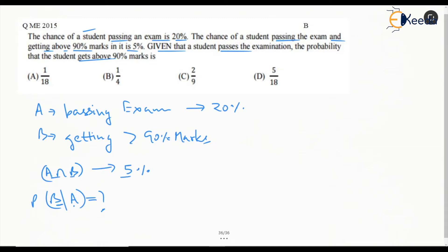We know that probability of A intersection B is probability of A into probability of B given A. It can also be written as probability of B into probability of A given B. But we have this value and we need this value, so we will use this formula.